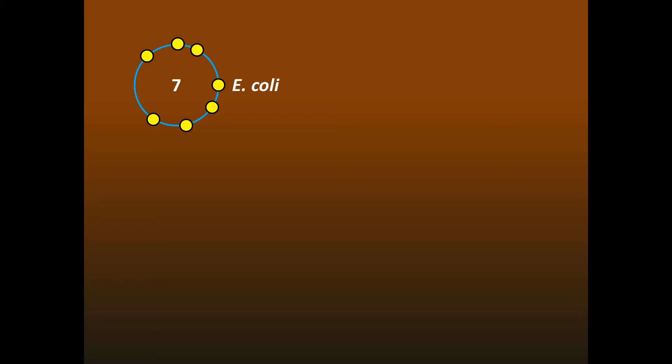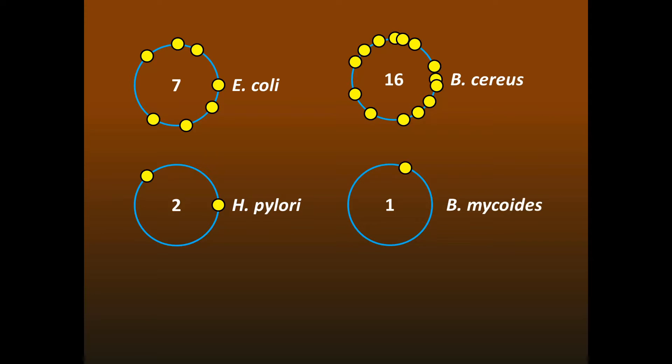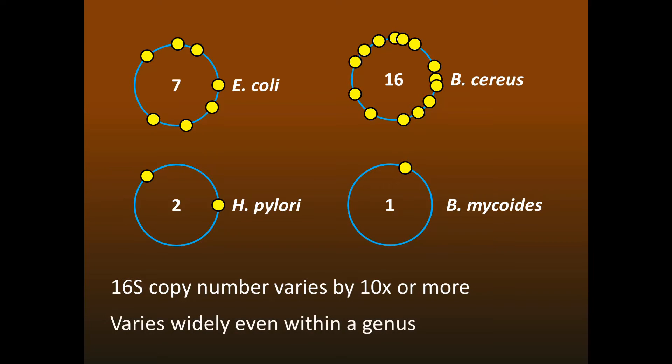Prokaryotes often have several copies of the 16S gene. For example, E. coli has seven copies. H. pylori has two copies. Bacillus cereus has 16 copies. And Bacillus mycoides has just one copy. As you can see, the 16S copy number varies by a factor of 10 or more, even within a single genus, as the Bacillus examples show.